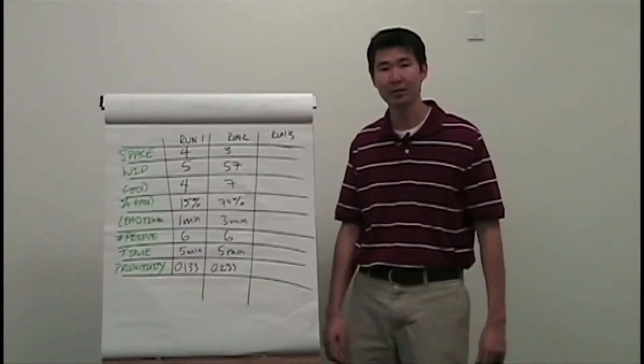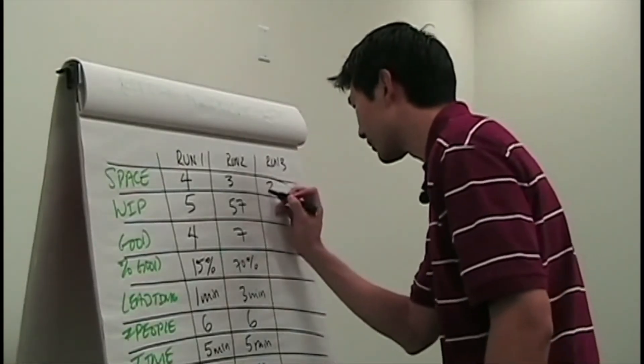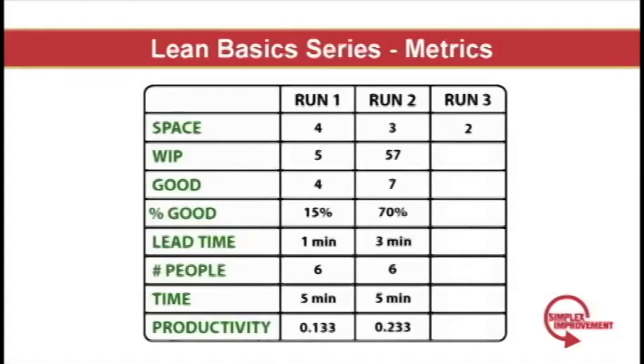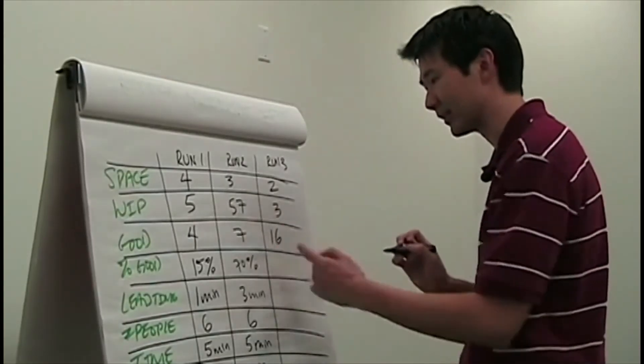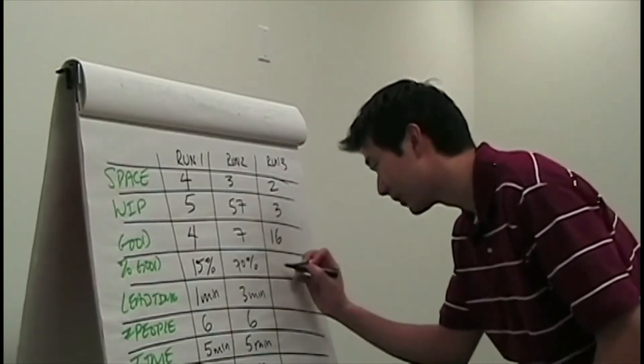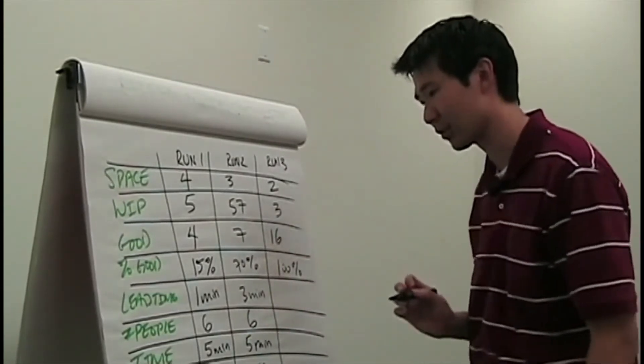So let's review our metrics for the third run. You can see as far as space goes, they only used two tables because they were much more compact. Work in process, only three, and that was controlled by the kanban in between each station. They actually produced 16 good planes, which is nearly double what they produced by using mass production. 100% of the planes were good because of the quality at the source.